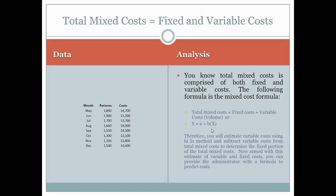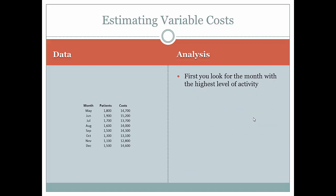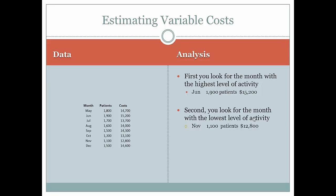We're going to use variable costs to subtract from the total mixed costs to isolate fixed costs. Armed with an estimate of both variable and fixed costs, you can provide the administrator with a formula to predict costs. First, look for the highest month of activity — that's June, with 1,900 patients and total costs of $15,200. Next, look for the lowest level of activity — that's November, with 1,100 patients and total costs of $12,800.